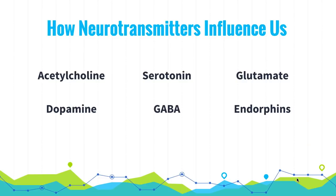Next, let's talk about some specific neurotransmitters and how they impact us. You've probably heard of serotonin and dopamine, but perhaps not acetylcholine, glutamate, or endorphins. Let's go through them one by one. Acetylcholine's function is primarily to enable muscles, learning, and memory. An example of what happens when it goes wrong is Alzheimer's disease — not being able to remember anything.